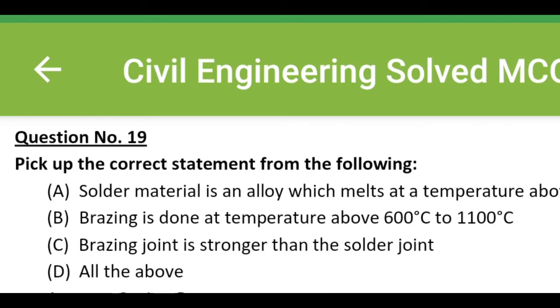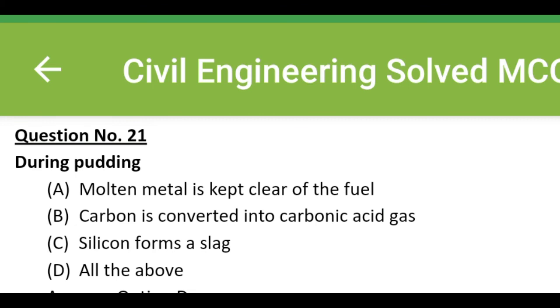Pick up the correct statement from the following: Option A, solder material is an alloy which melts at temperature above 400 degrees Celsius. Option B, brazing is done at temperature above 600 degrees Celsius to 1100 degrees Celsius. Option C, brazing joint is stronger than the solder joint. Option D, all of the above. The correct answer is option D, all the above.